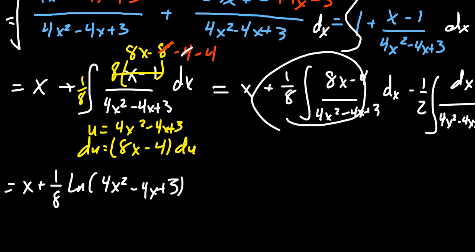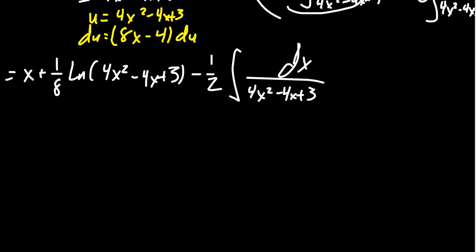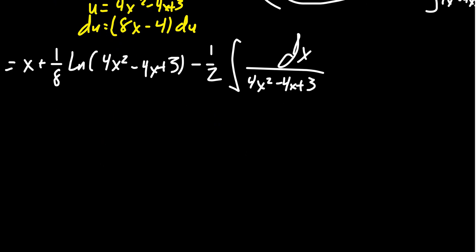And so what do we do with this last part? We have this negative 1/2 the integral of dx over 4x squared minus 4x plus 3. So we saw in the previous video that you're going to have to proceed to do some type of trigonometric substitution. In which case, if you do that, you start off with having to complete the square, because it's not quite ready to go yet.